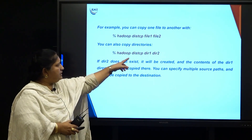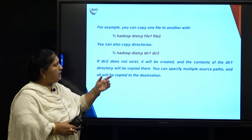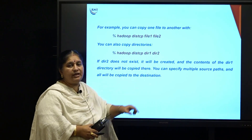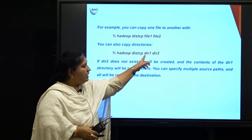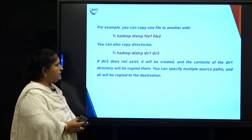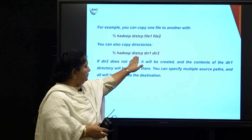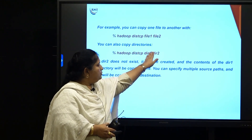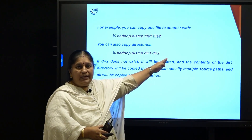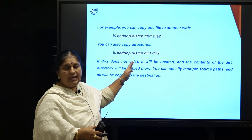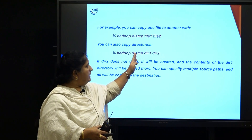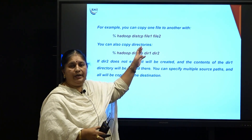If the second directory does not exist, it will create a new directory and all the contents of DIR1 will be stored into DIR2. If the destination directory is already existing, then DIR1 will be made as a subfolder in DIR2. And if you specify, for example, Hadoop distcp DIR1, DIR2, DIR3, DIR4 with four arguments, the last one will be taken as the destination folder and all remaining ones are taken as the source folders. So DIR4 will be the destination folder and the contents of DIR1, DIR2, and DIR3 are copied into DIR4.